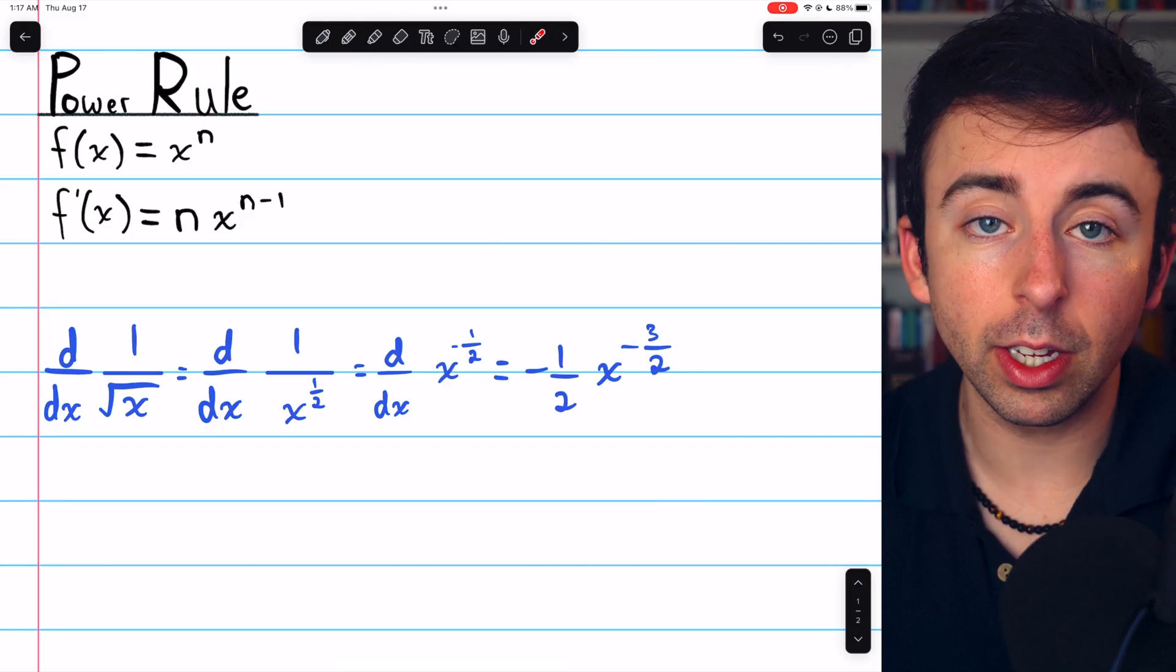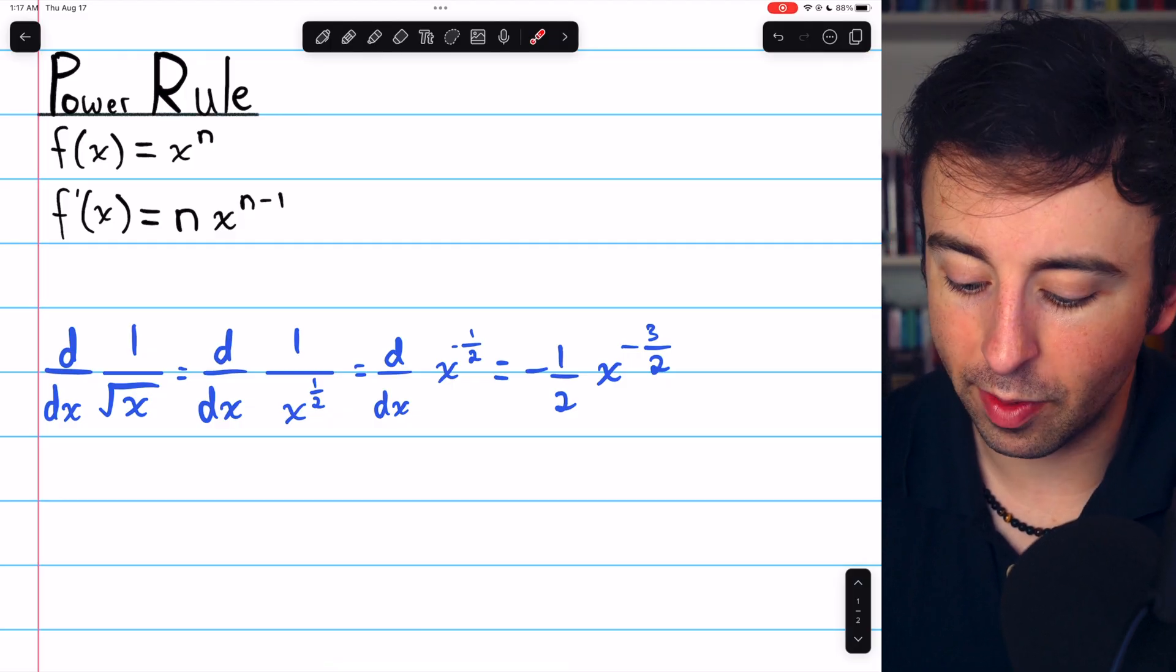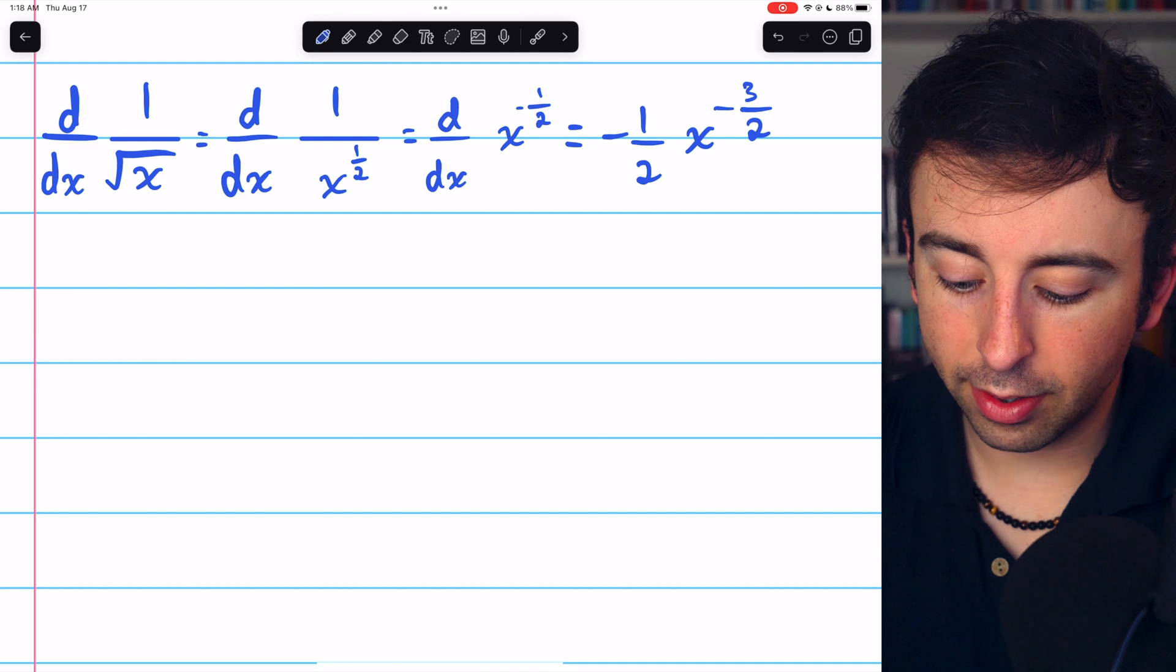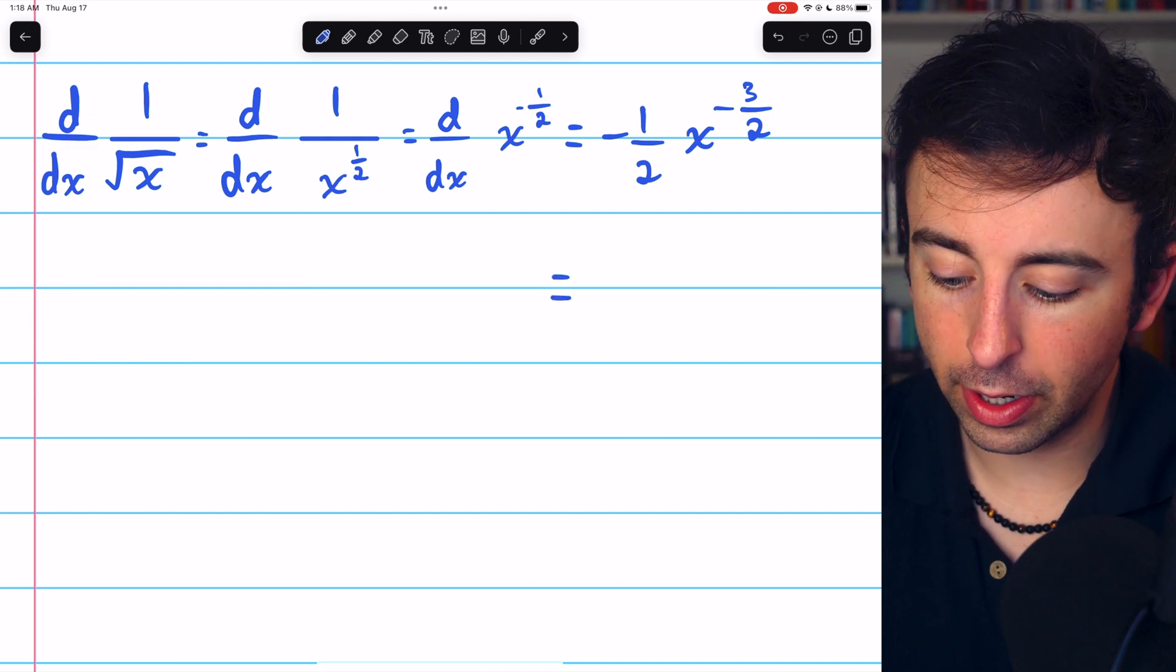And that is the derivative of 1 over the square root of x. Negative half x to the negative 3 halves. If we want to write this in a more compact form without negative exponents,